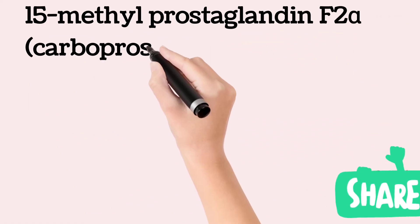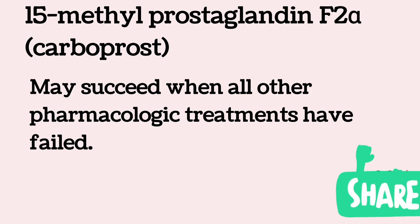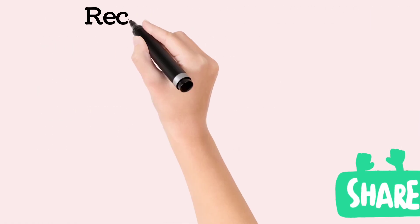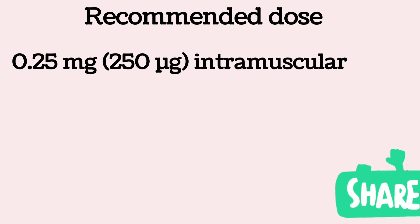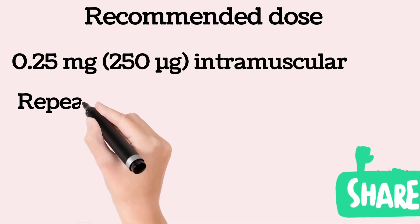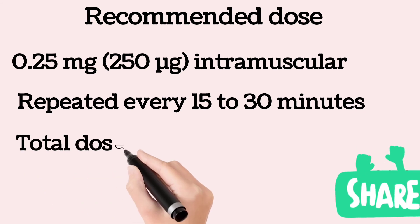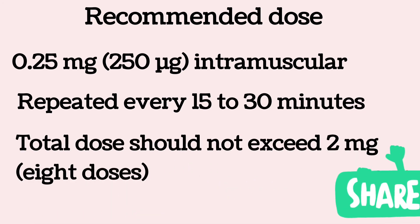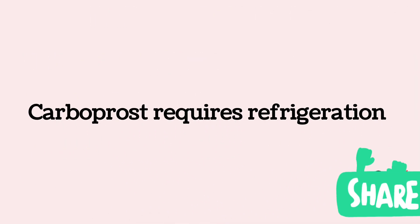Carboprost, or 15-methyl prostaglandin F2-alpha, is commonly administered when all other pharmacological treatments have failed. The recommended dose is 0.25 mg (250 micrograms) administered intramuscularly, which may be repeated every 15 to 30 minutes. The total dose should not exceed 2 mg, meaning a maximum of 8 doses. Carboprost requires refrigeration.